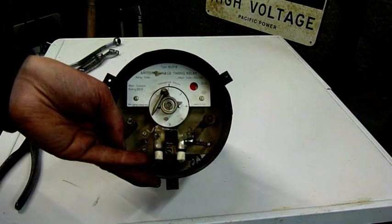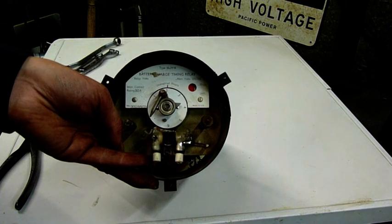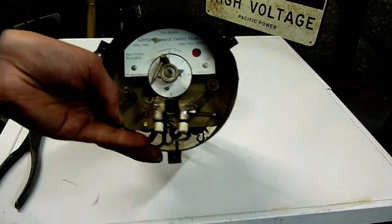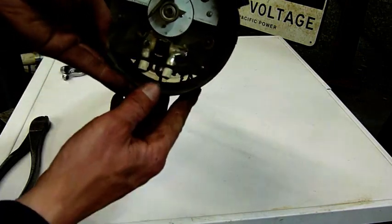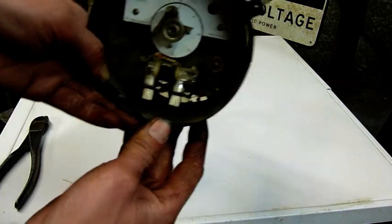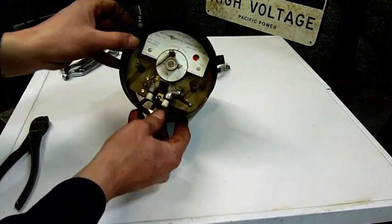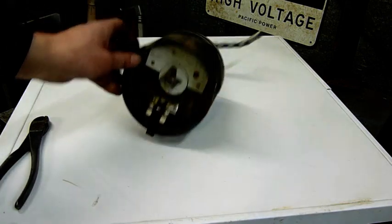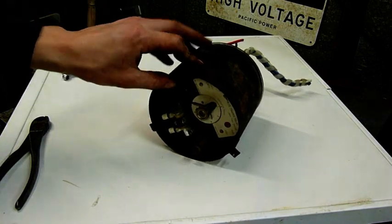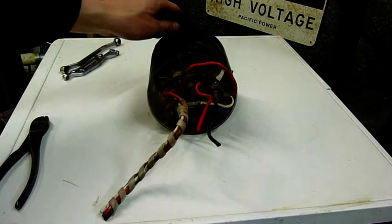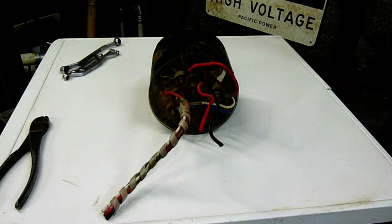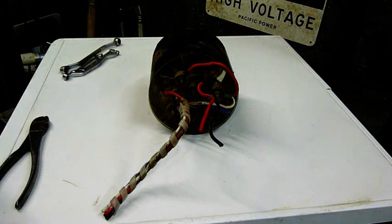It's made by AEI in the UK. Main contact rating is 30 amps and it's got a rather nasty looking amount of mercury in there. That little tilt switch there has got a huge amount of mercury in it. That's kind of cool. So we're going to carefully take it apart and see how it works. The rest of the battery charger has been scrapped long ago so nothing to lose by dismantling this thing.